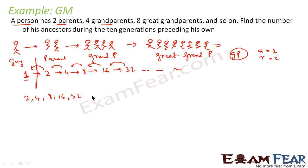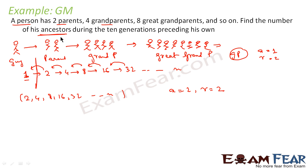In this GP, a = 2 and r = 2. Please note: when talking about the full sequence, a = 1, which includes the person himself. But since the question asks for ancestors only, we use the GP starting at 2. Here a = 2, r = 2, and n = 10 because they are asking for the 10th generation.